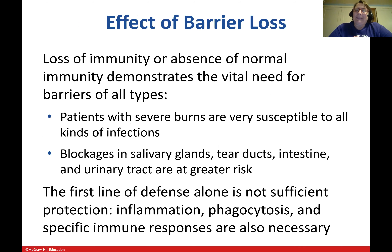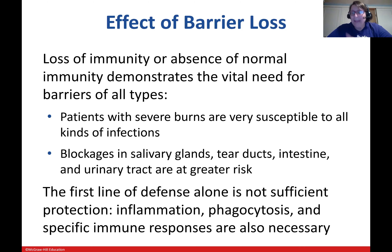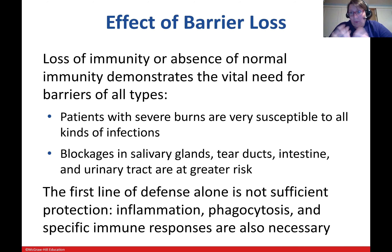When you lose that barrier, you've lost that part of the immune system. The most common example is burn victims, who are highly susceptible to all kinds of infections because the barrier that normally keeps things out is gone. This is where Pseudomonas aeruginosa becomes an opportunistic pathogen — it lives harmlessly on the outside of intact skin, but when that barrier is gone, Pseudomonas can grow and is naturally resistant to most available antibiotics, making it very hard to kill. Similarly, blockages in certain glands prevent normal flushing, increasing the risk of infection taking hold in that area.